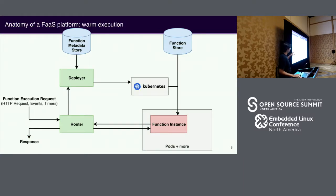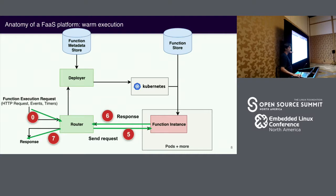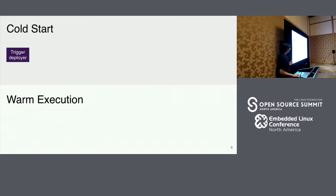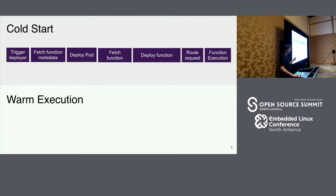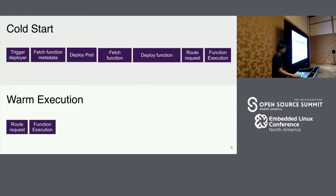After the function has cold started, the rest is very fast. Any further events that go to that function are simply proxied to that instance and returned. A cold start triggers a deployer, fetches metadata, deploys a pod, fetches the artifact, runs the function instance, the request is forwarded, and finally the function runs. A big part of functions platform performance optimization is, one: making sure that most executions are warm rather than cold, and two: making sure that when cold starts occur, they occur as fast as possible — more warm executions and faster cold starts.